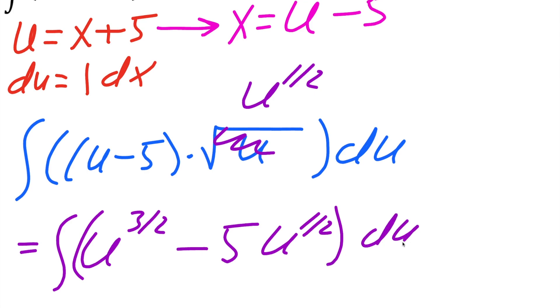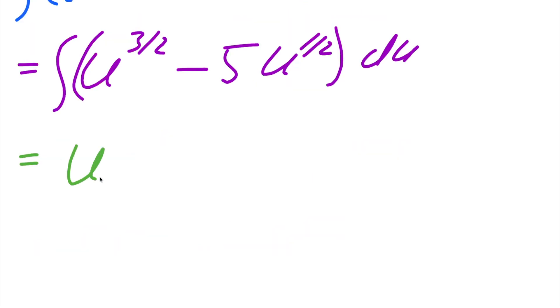Now this is a regular problem. Now it's pretty easy to get the integral of each term. So we would get u raised to 3 divided by 2 plus 1 gives us 5 divided by 2. We also have to divide by 5 divided by 2 minus 5u. So 1 half plus 1 is 3 divided by 2. We would also have to divide by 3 divided by 2, and don't forget the plus c.